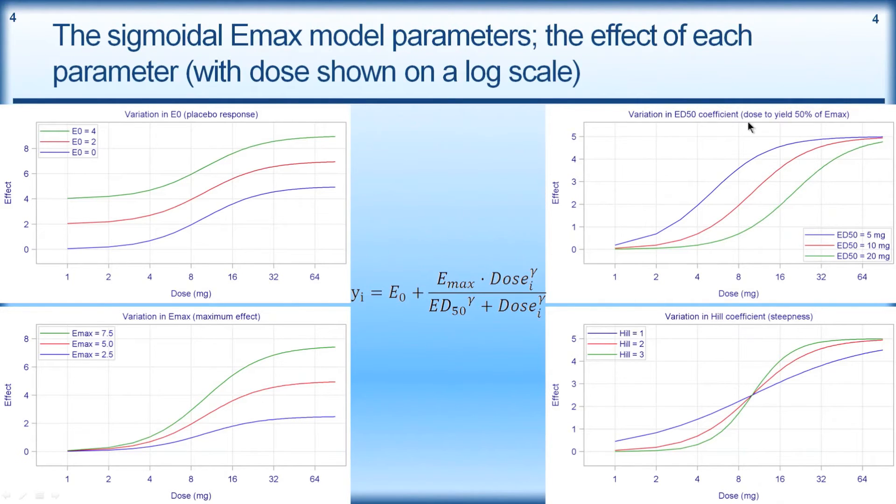Over here, we're talking about the variation in the ED50. So it changes the location from 10 here in the middle to 20 down to 5. And the ED50 is the dose required to give 50% of the maximum effect. And finally down here, we're looking at the Hill coefficient. The Hill coefficient of 1, 2 or 3. The higher the number, the steeper the curve. These all have the same ED50 of 10.